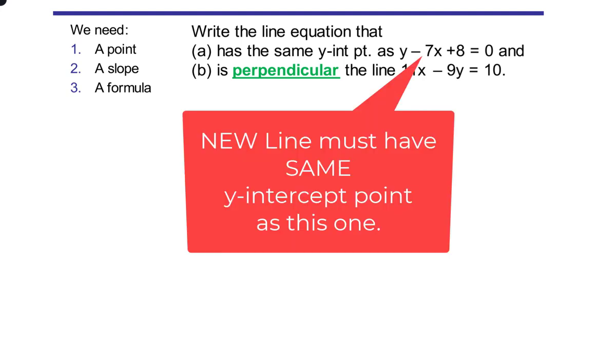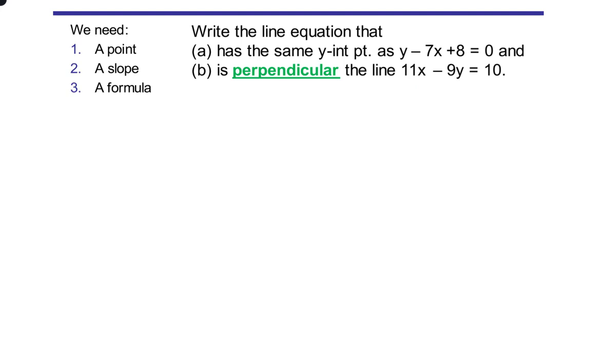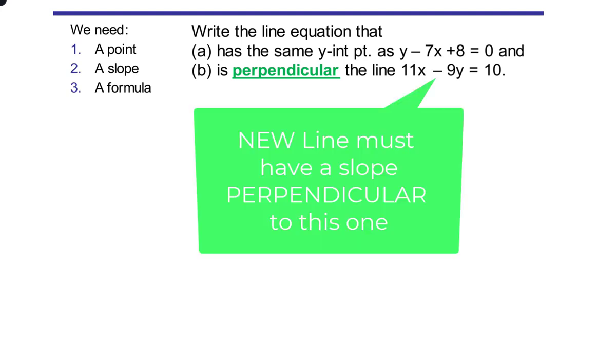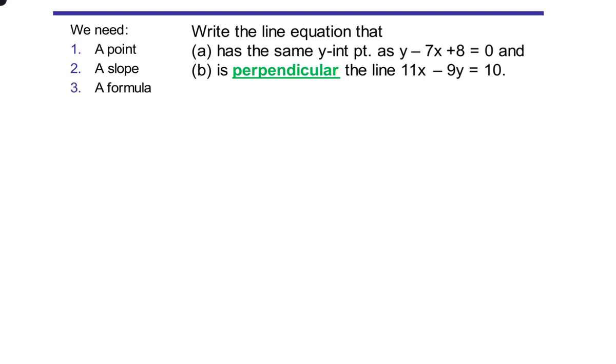We're writing a linear equation that has the same y-intercept point as y minus 7x plus 8 equals 0. Well wait, what's the point? It didn't tell us a point to use. That's going to require some extra thinking and logic. Also the line is supposed to be perpendicular to another line, 11x minus 9y equals 10. So we have a lot going on here and we don't have a point to write our new line.